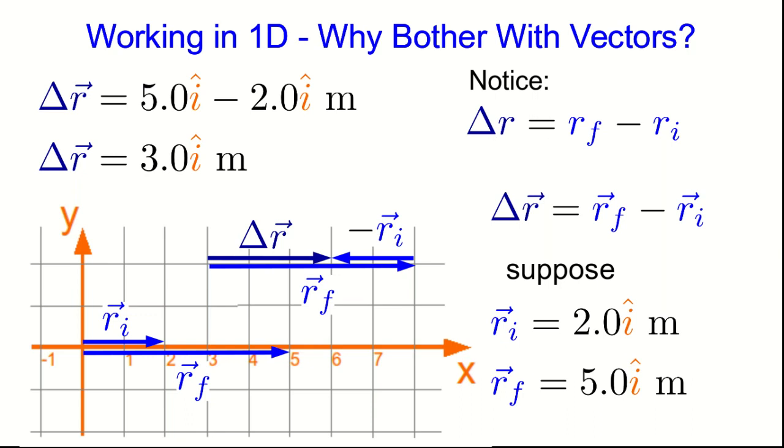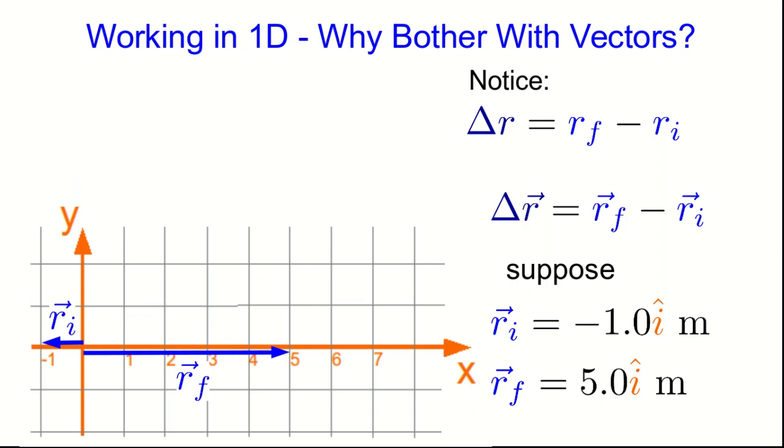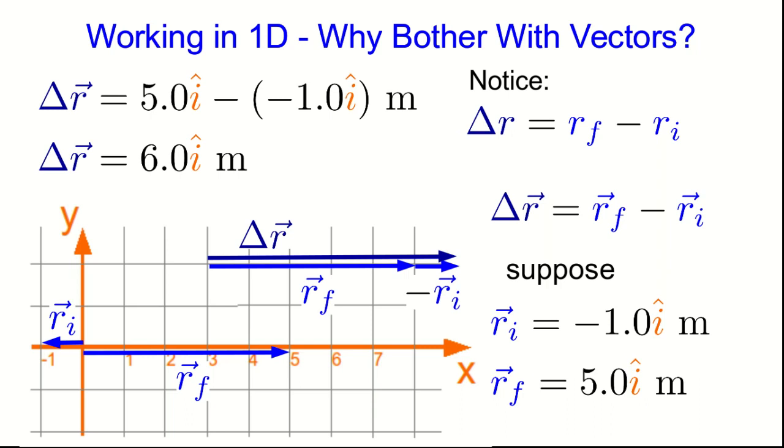Well, to answer that, I'm going to keep working by example. I'm going to take the initial position vector, and I'm going to change it around to negative 1 meter i-hat. So now the vector subtraction looks like this, and delta r is here. So in numbers, that's like this. Notice it's no longer true that the magnitude of delta r, which is 6 meters, is the magnitude of r_f, which is 5 meters, minus the magnitude of r_i, which is 1 meter. Notice, a magnitude is always positive.